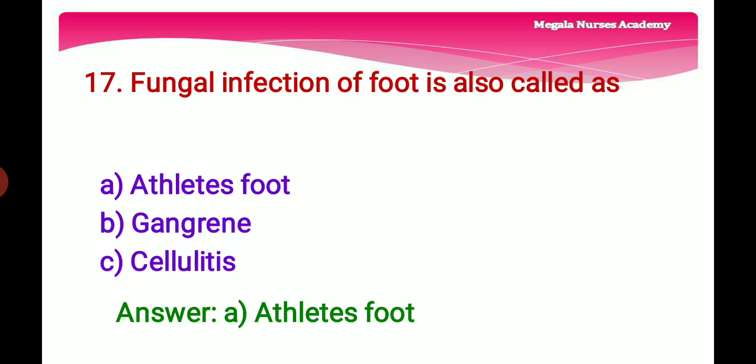Seventeenth question: Fungal infection of the foot is also called — Option A: Athlete's foot, a fungal infection usually beginning between the toes. Option B: Gangrene, dead tissue caused by infection or lack of blood flow. Option C: Cellulitis, a common and potentially serious bacterial skin infection. The right answer is Option A, athlete's foot, because when fungus grows on the feet it is called athlete's foot, affecting people whose feet tend to be damp and sweaty.